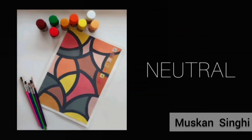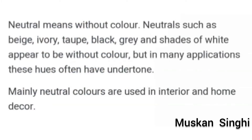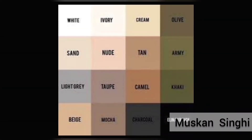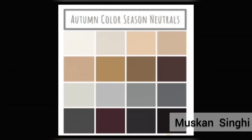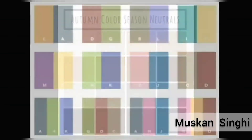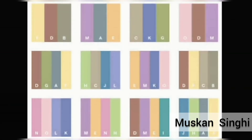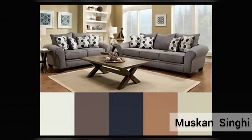What is the neutral color scheme? Neutral means without color. Neutrals such as beige, ivory, taupe, black, grey, and shades of white appear to be without color, but in many applications they often have undertones. Neutral colors are mainly used in interior and home decor. There are many neutral colors — light neutral colors, autumn color season neutral colors, dark neutral colors, etc. Here are a few examples of light shades, dark shades, and neutral color shades used in interior and home decor.